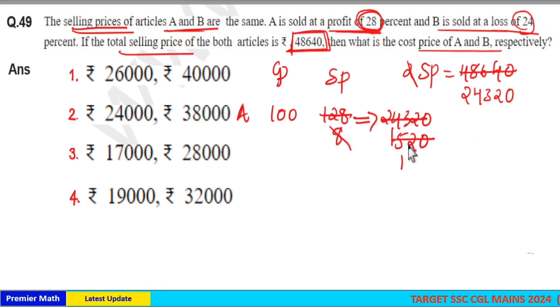8 goes 1 time in 15, 9 times in 72, remaining 0. So 1 part, 1 rupee is equal to 190 rupees, which means here 100 rupees is the cost price of A which is equal to 100 into 190, 19,000.